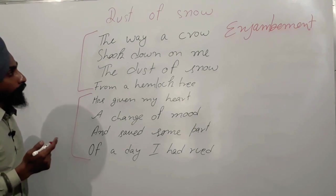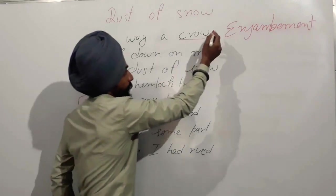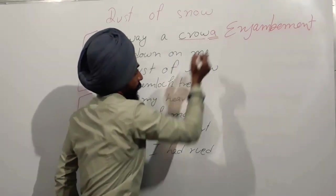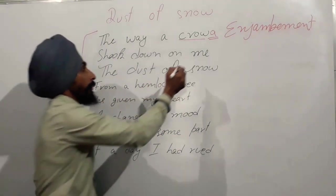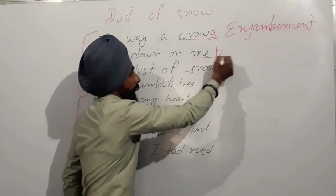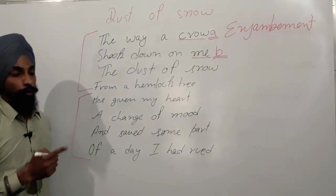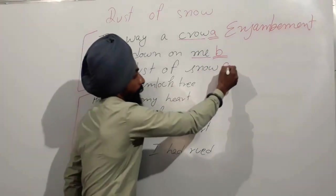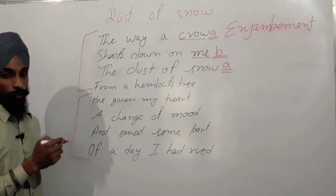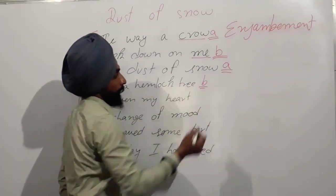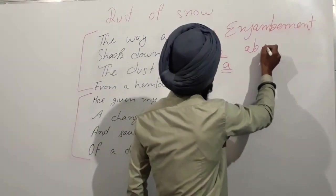In the first stanza: 'The way of crow' — crow is the last word, we give it letter A. 'Shook down on me' — me does not rhyme with crow, so we give it letter B. 'The dust of snow' — crow and snow rhyme, so same letter A. 'From a hemlock tree' — tree and me rhyme, so letter B. The first stanza's rhyme scheme is A, B, A, B.